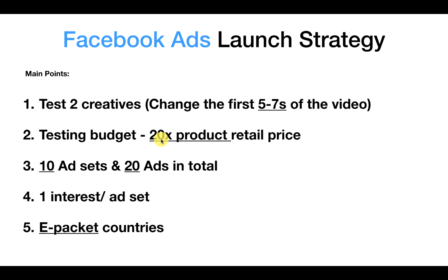So if your product price is $30, then your testing budget should be around $600 if your budget can allow that. Because the higher the price of your item, the harder it is to sell and the higher your cost per conversion will be. When you've got a low ticket item like I've got here, it's really easy to get a high conversion rate and therefore a low cost per purchase, so you don't need to spend as much to test a product.